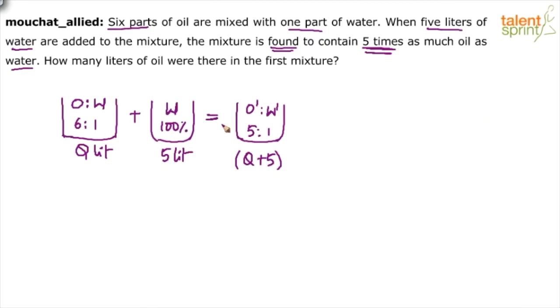Now either go for allegation rule or simply balance the quantity of oil. Remember, the quantity of oil on the left hand side should be equal to quantity of oil on the right hand side. Based on that, you will be able to find out Q, which is the required answer.